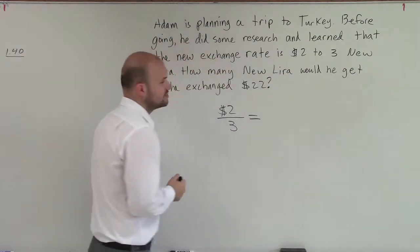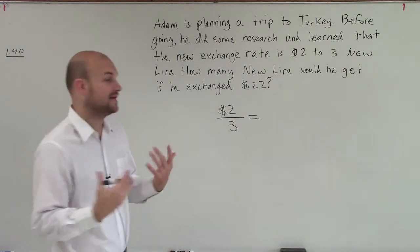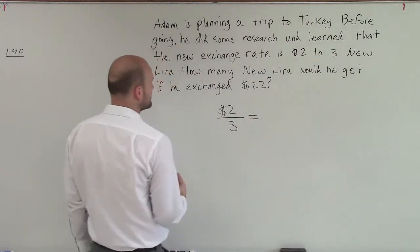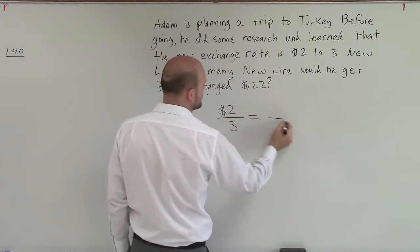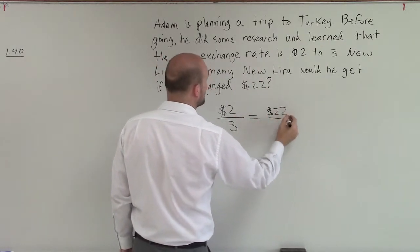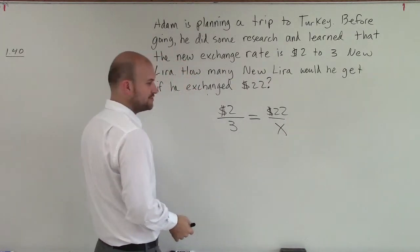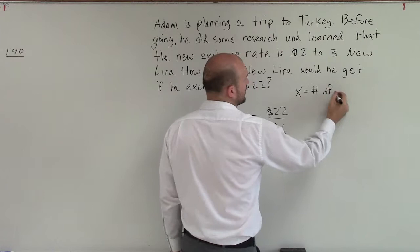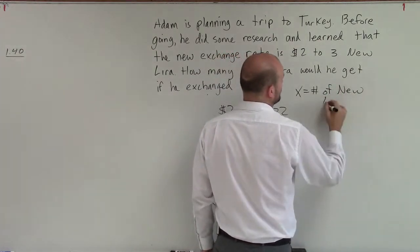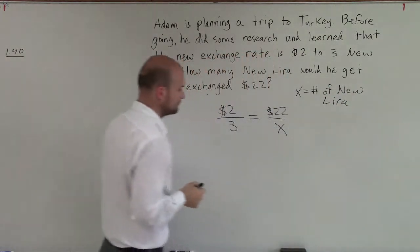We want to set this equal to another equivalent proportion. Well, the question is asking how many new lira would you get if you exchanged $22? So we're saying, what if you had $22, how many new liras did you have? Therefore, we write x equals the number of new lira.